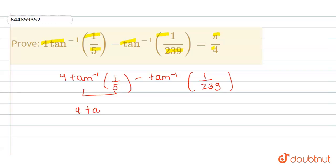We will take 4tan inverse of 1 by 5 and we can write it as 2 into 2tan inverse of 1 by 5.